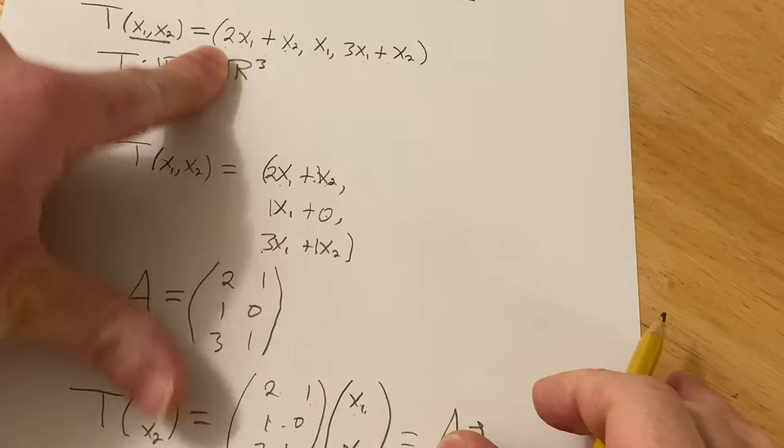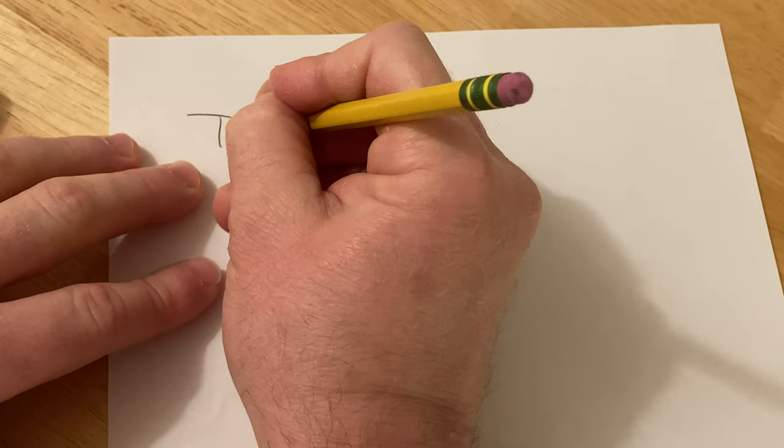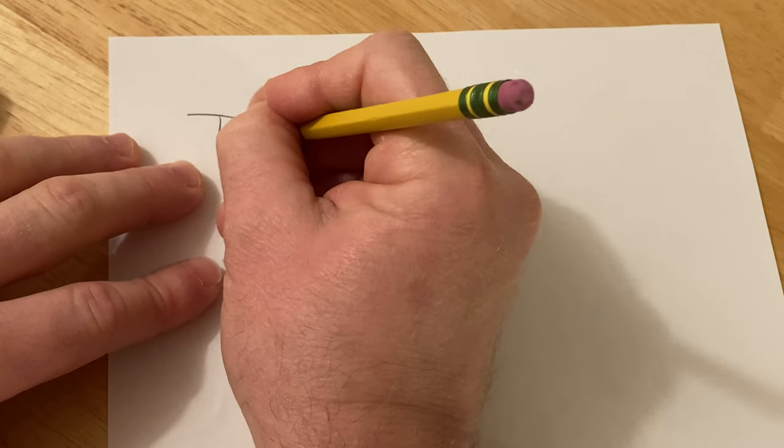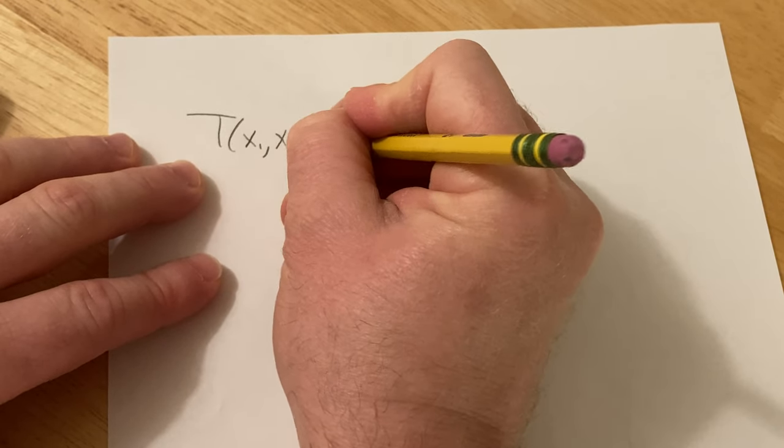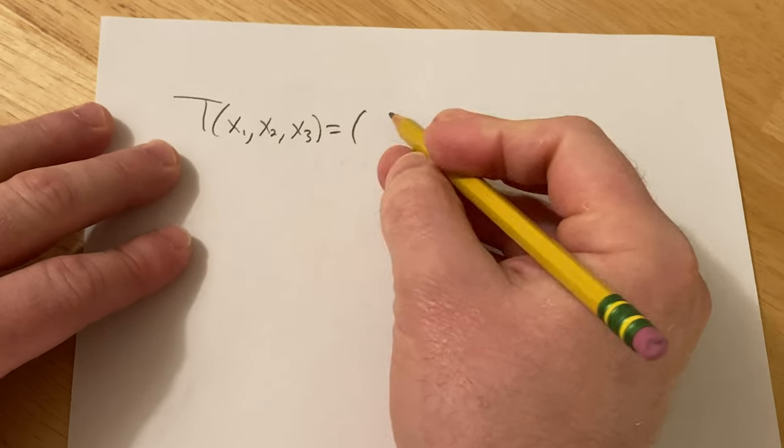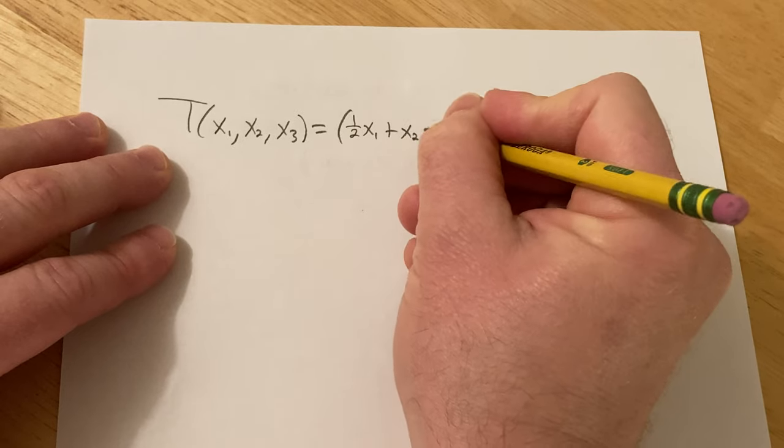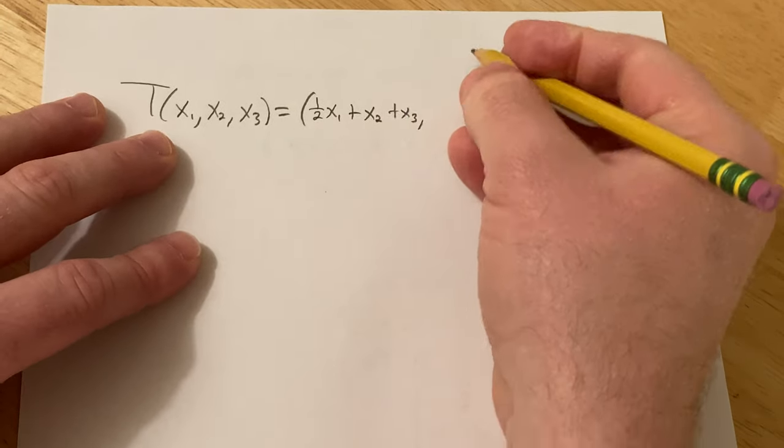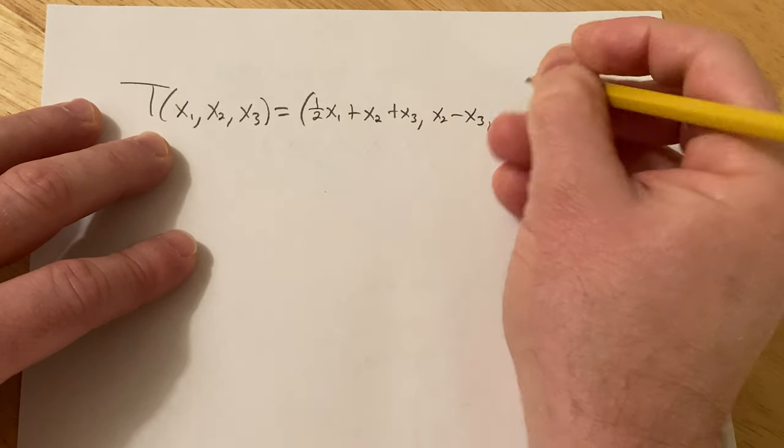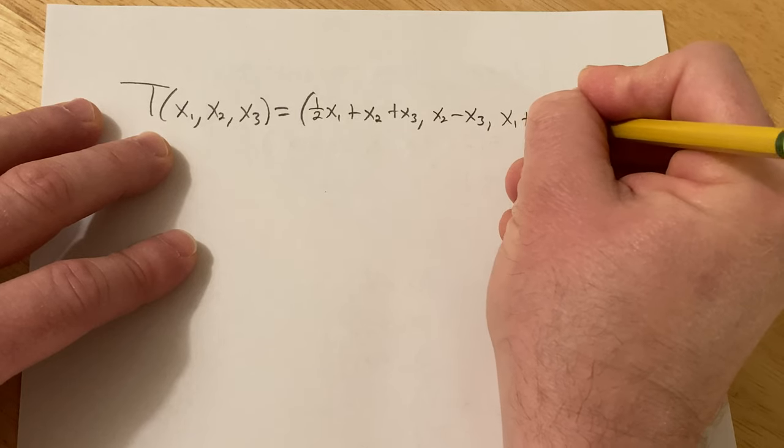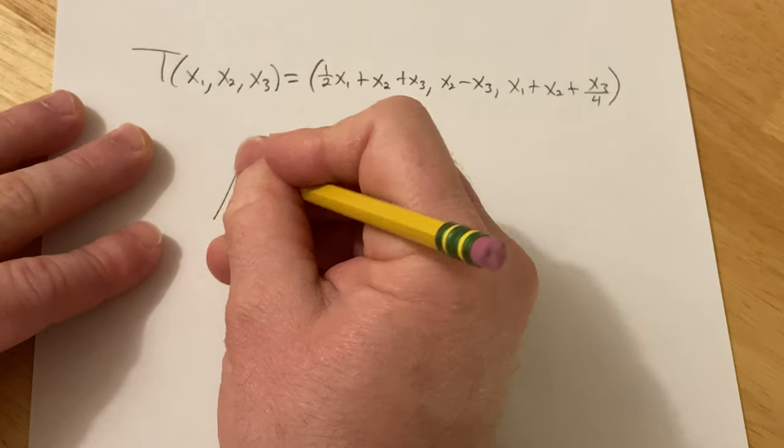So you can get the matrix right away. So let's just do another one really quickly just to show you how easy it is. Let's say we have x1, x2, x3. And let's say this is going to be 1/2 x1 plus x2 plus x3. And then here we have x2 minus x3. And then here we have x1 plus x2 plus x3 over 4.